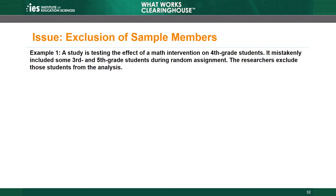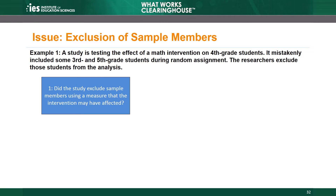A study is testing the effect of a math intervention on 4th grade students. The researchers mistakenly included some 3rd and 5th grade students during random assignment and exclude those students from the analysis. First, we ask whether the study excluded those students based on something that the intervention might have affected. In this case, the study excluded students based on their grade level. The students were already in those grade levels before the intervention, so the exclusions are unrelated to the intervention. So the answer to question 1 is no.